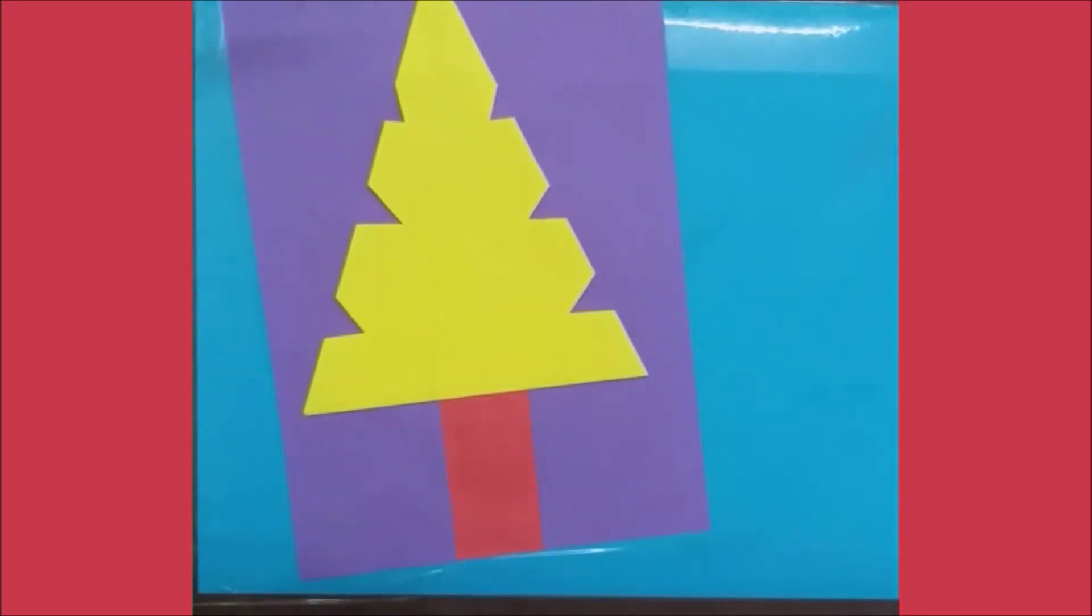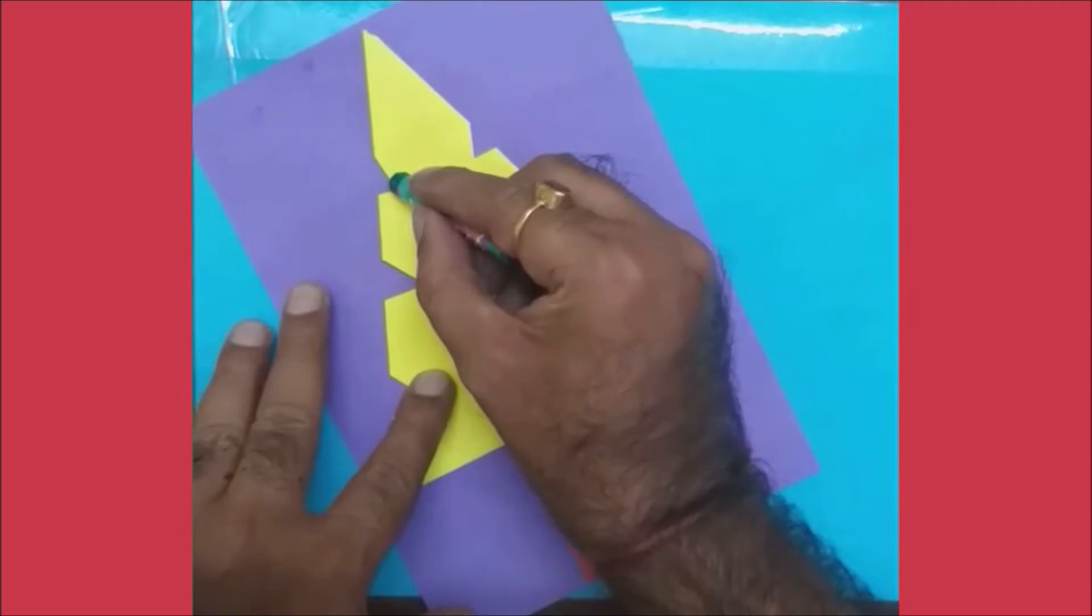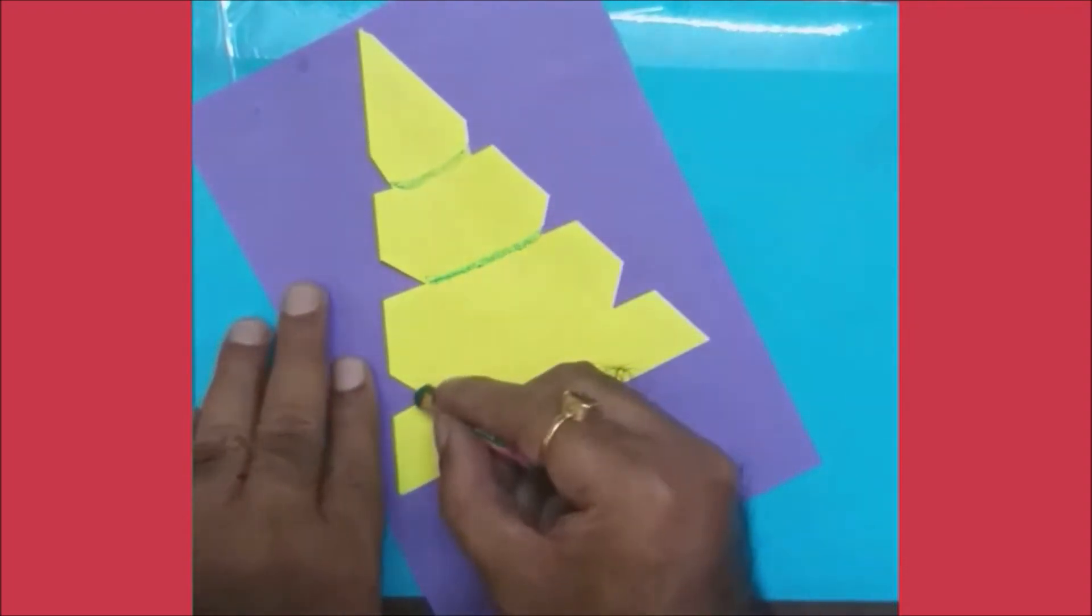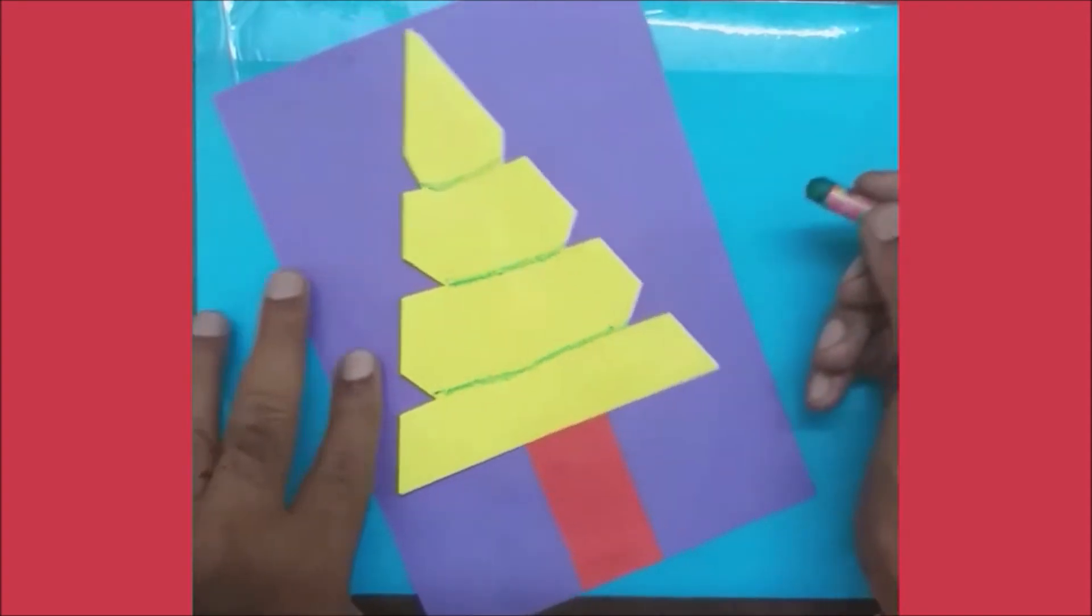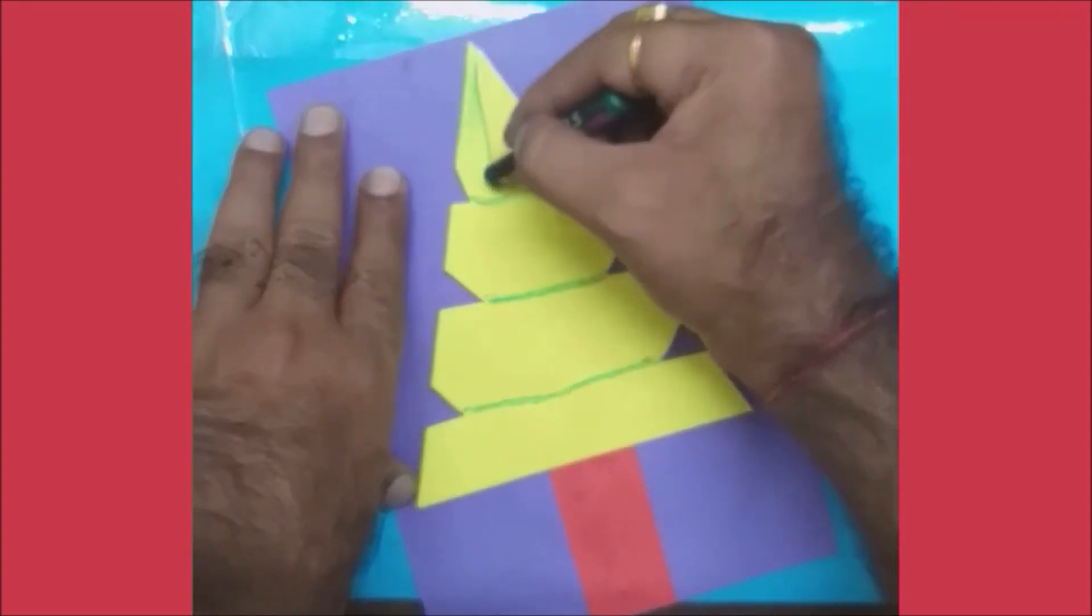Now take a dark green color or pastel dark green color. Make the levels. You can give a few strokes which are leaning down.